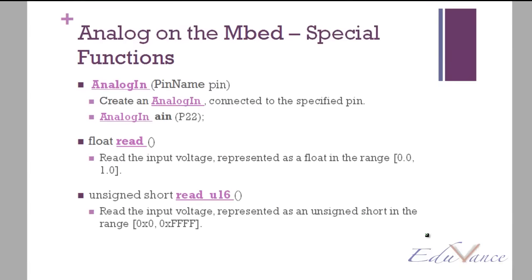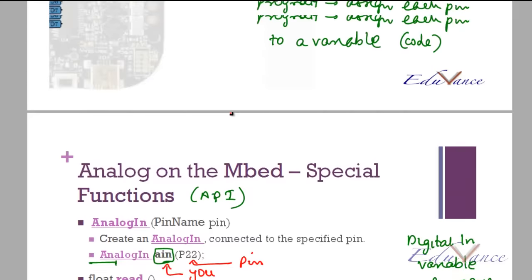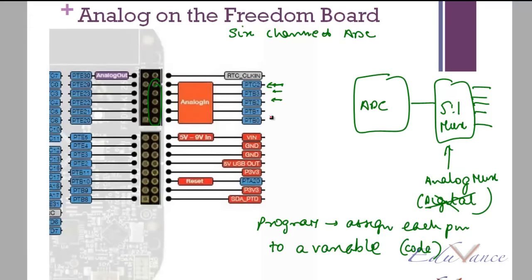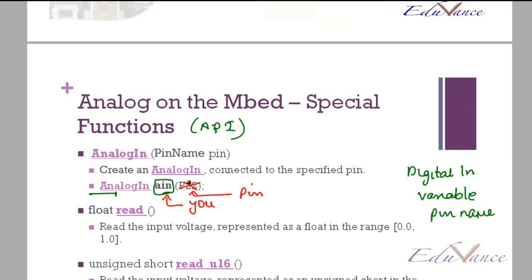At any of these you can give the analog signal, and you can use multiple channels. In the program you need to assign each pin to a variable which we will see as part of the code. So let's look at the functions as part of the API. First and foremost is the AnalogIn. In the digital labs we used DigitalIn, similarly here we will use AnalogIn. You need to specify a variable and then you need to specify a pin name.